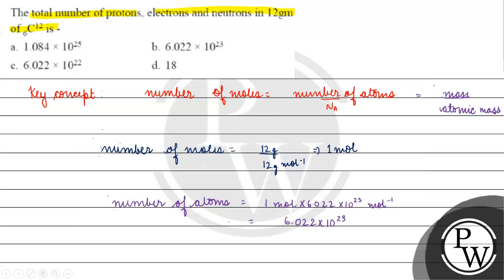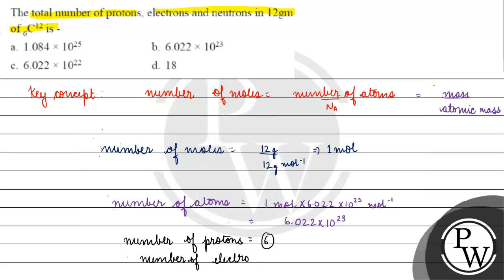The number of atoms of ¹²C₆ equals the atomic number, which gives us the number of electrons and number of protons — they are the same for a neutral species. So carbon has 6 protons and 6 electrons.